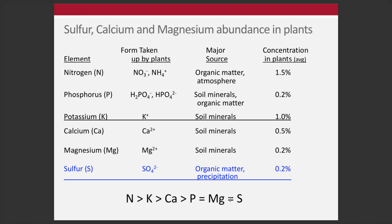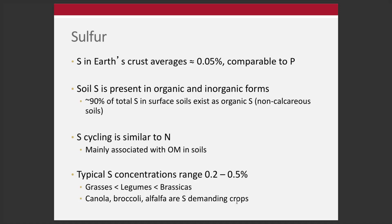In terms of the concentration in the earth's crust, sulfur is about 0.05% compared to what we would find for phosphorus. It's present in both the inorganic and organic forms. Most of the sulfur, particularly true for soils in Ohio and the Midwest, exists in the organic form. Sulfur is similar to nitrogen in terms of cycling — it's strongly associated with organic matter cycling and strongly mediated and controlled by microbiology.